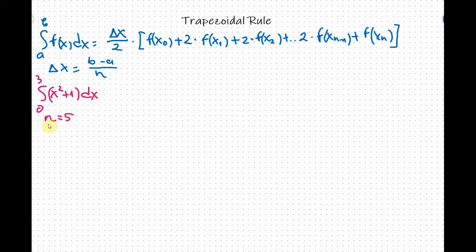With n equals 5 means we are going to have 6 terms in the equation from x sub 0 through x sub 5. First let's figure out delta x.